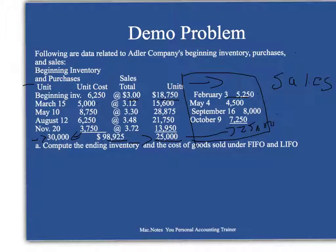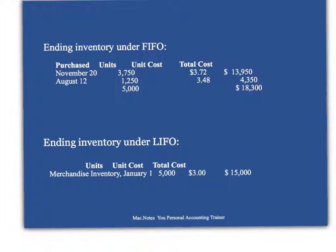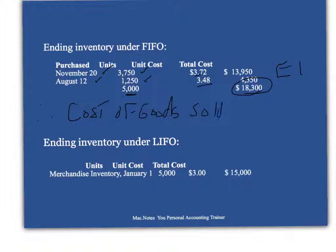Compute the ending inventory and cost of goods sold under FIFO and LIFO. Under FIFO, the ending inventory would be the purchases of November 20th and August 10th. We have 5,000 units remaining: $3,750 purchased November 20th and $1,250 at the end of the year. So the ending inventory value is $18,300, and the cost of goods sold is $98,925 minus $18,300, which equals $80,625.